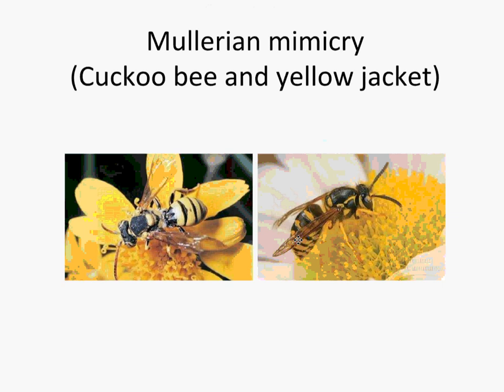Another type of mimicry is Müllerian mimicry, where two harmful species look like one another. If one species isn't being eaten because it is noxious to a predator — it stings, for example — then if another species looks just like it, that species will also avoid being eaten. In a way they protect one another. This is why many bees and wasps share the same kind of shape and coloration — we know to avoid them.